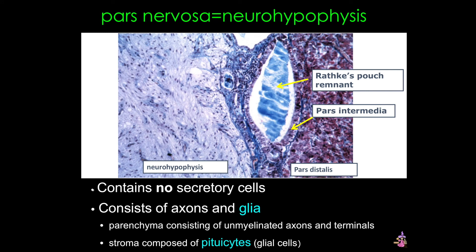Here's a section of pars nervosa. Remember, this develops as a downgrowth from the diencephalon, so this is nervous tissue — note the contrast to the more cellular pars distalis on the right. The unmyelinated axons of the hypothalamic nuclei and their terminals form the bulk of the parenchyma of the pars nervosa; there are no neuronal cell bodies present. The remaining roughly 25% consists of glial cells called pituitocytes, which are related to astrocytes. You can also see a remnant of Rathke's pouch and a tiny bit of the pars intermedia.